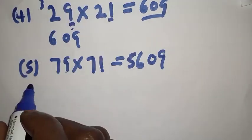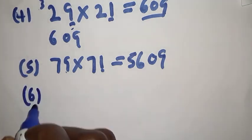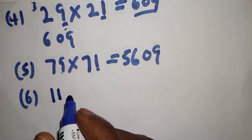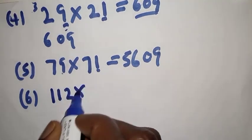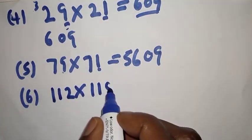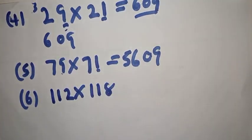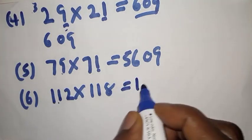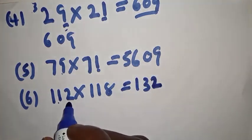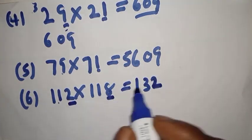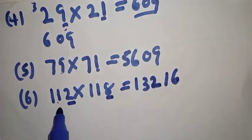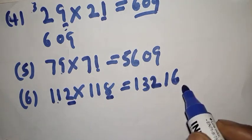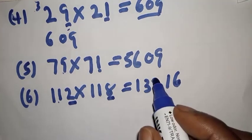Number six: 112×118. The tens portion here is 11, the next value after 11 is 12, so 11×12=132. Write 132. Then the units digits: 2×8=16. Therefore 112×118=13,216.